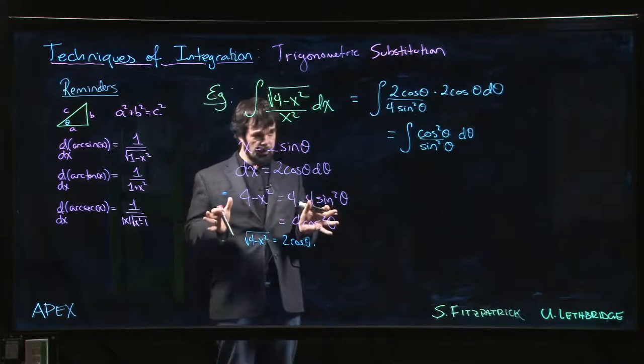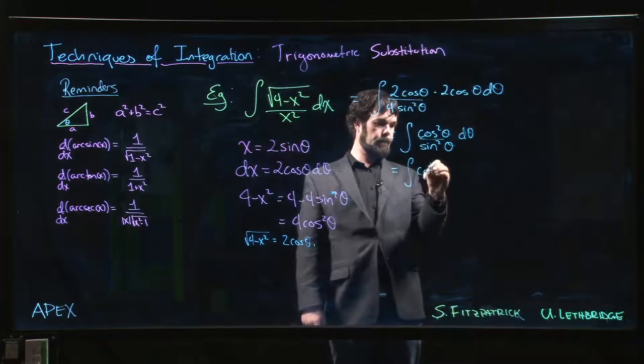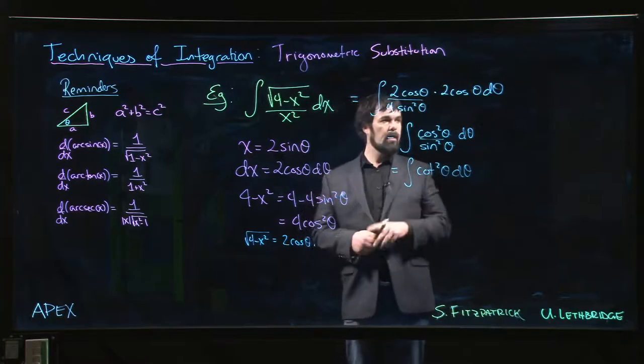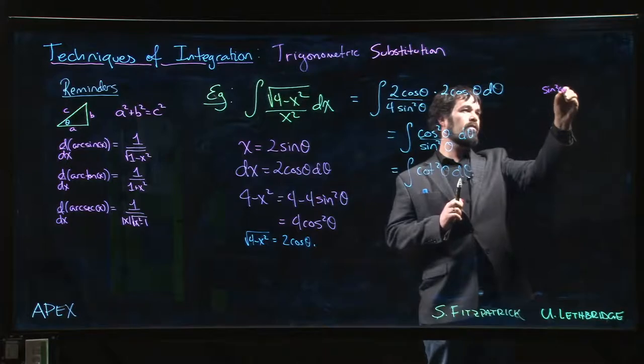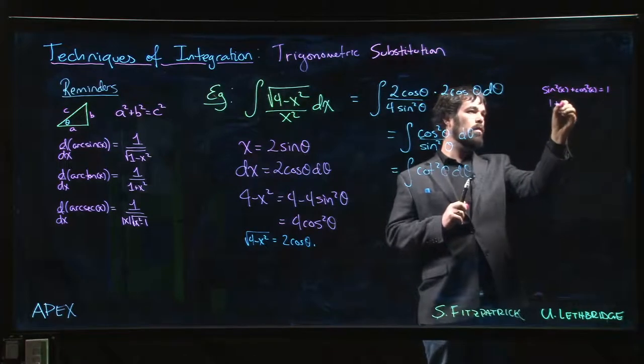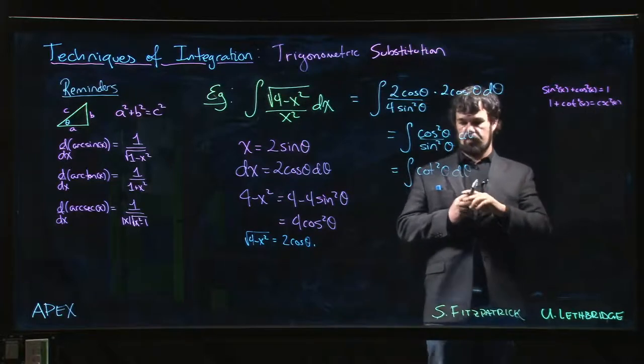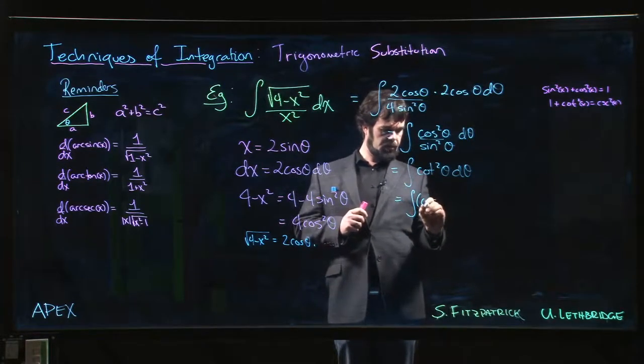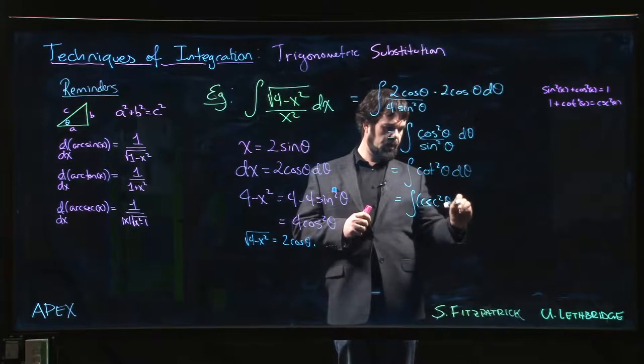Actually, we can work with that, right? We can work with cotan squared. What is cotan? So we usually don't encounter cotan that often, right? But we might remind ourselves, just kind of hop over on the side and we say, hey, so remember sine squared plus cos squared is 1. We divide everything by sine, 1 plus cotan squared is cosecant squared. So this is the same thing as the integral of cosecant squared theta minus 1.